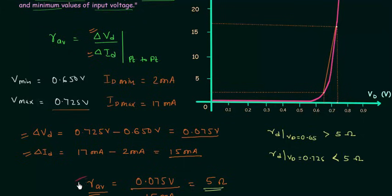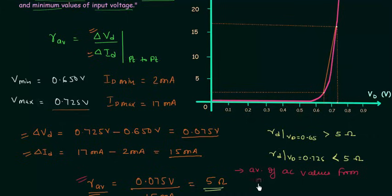The average AC resistance is the average of AC values from 2 milliamps to 17 milliamps. It is good to use only one resistance value in calculations, so we use the average AC resistance in this case.